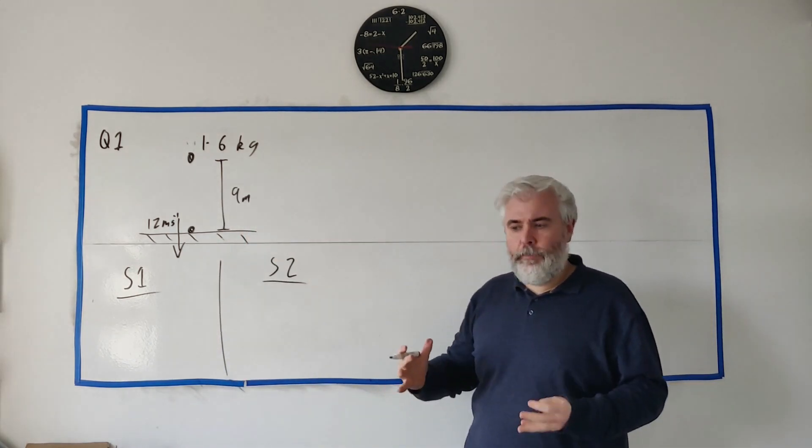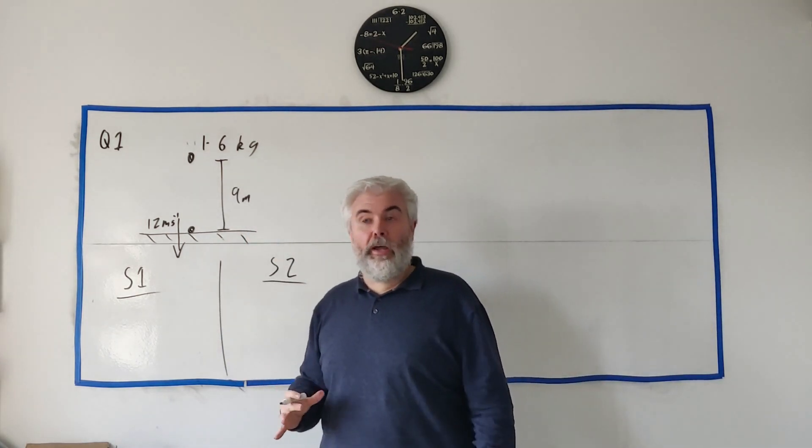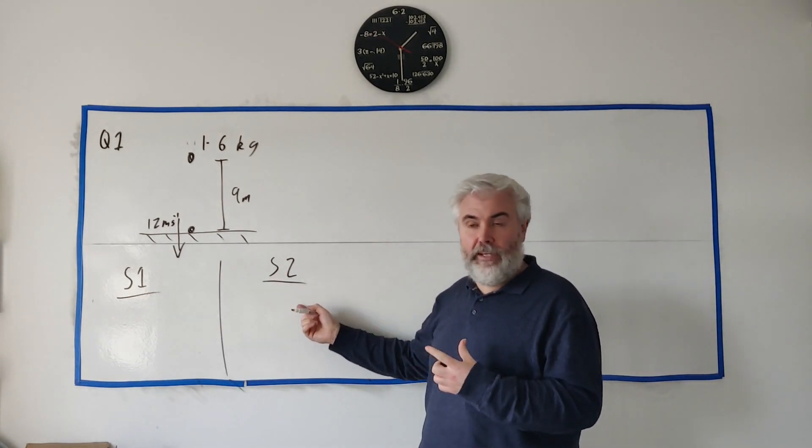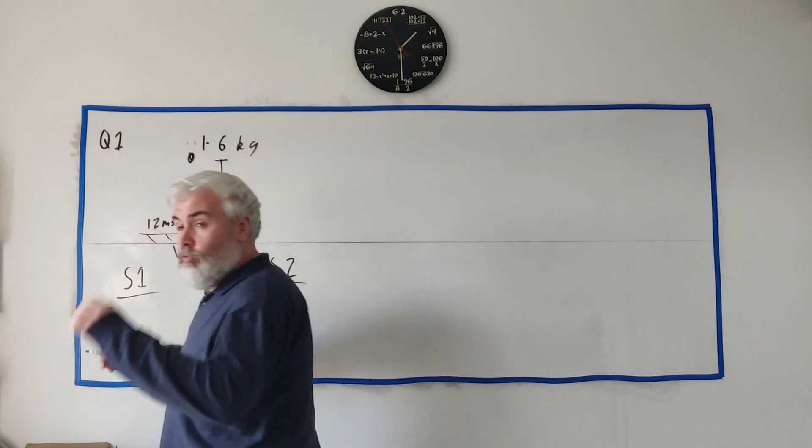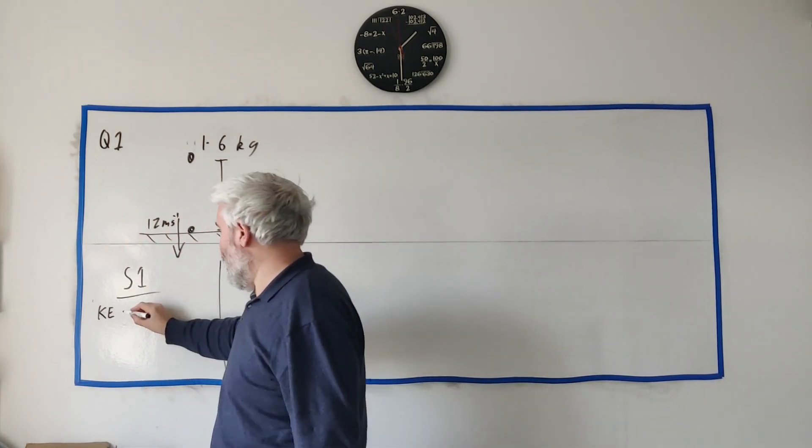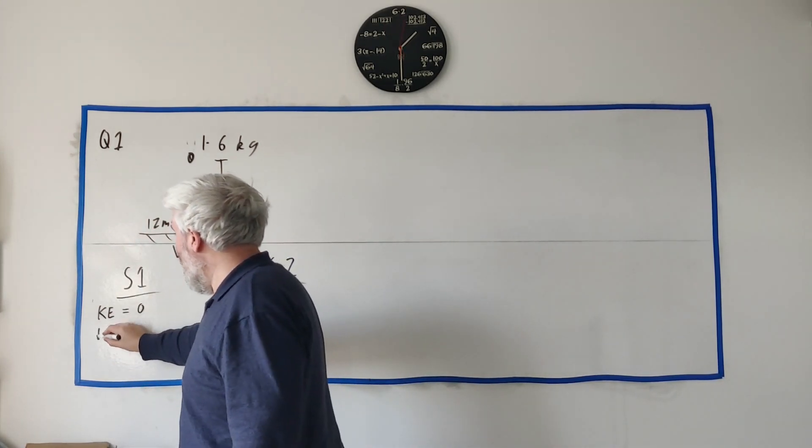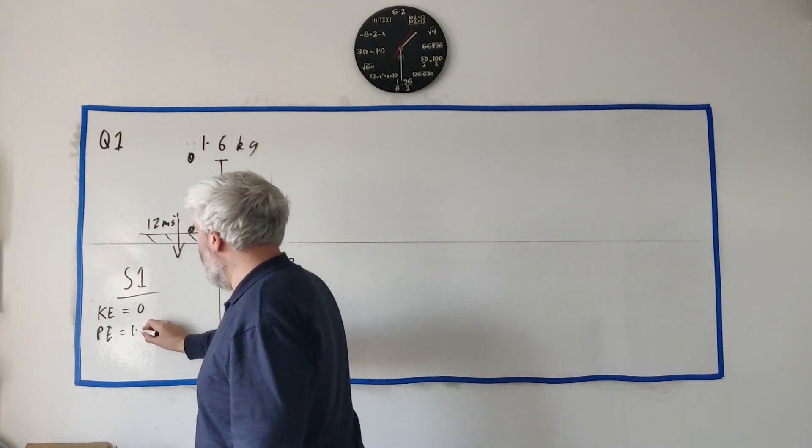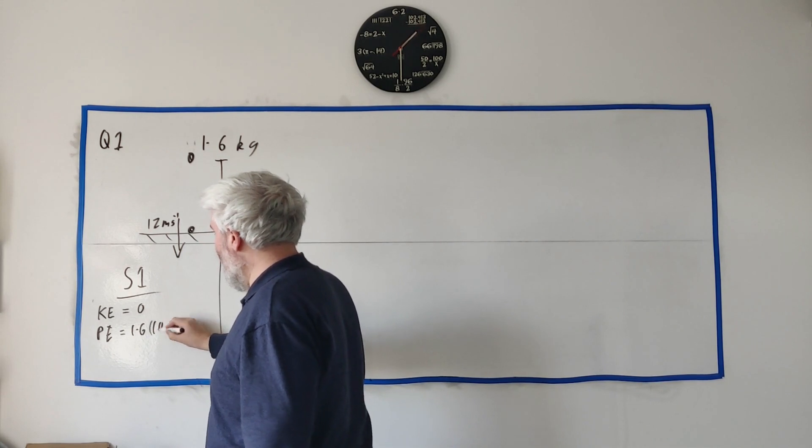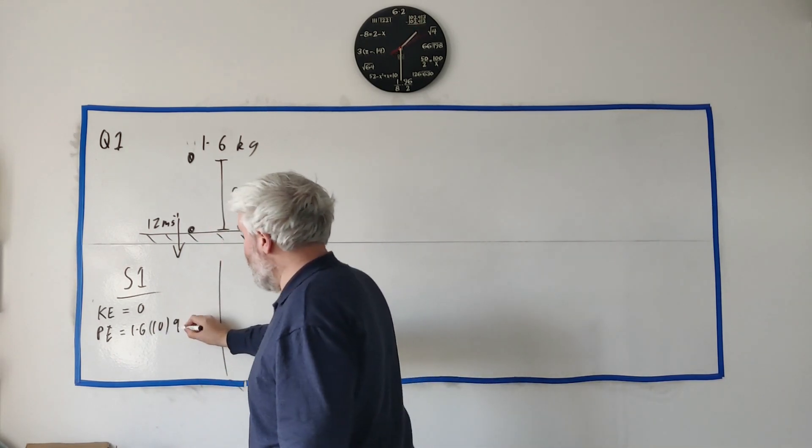State one and state two - I think about the energies I know at each state. The kinetic energy, we dropped it so it was at rest up here so KE is zero. The potential energy would be m which is 1.6, g which is 10, and h which is 9.